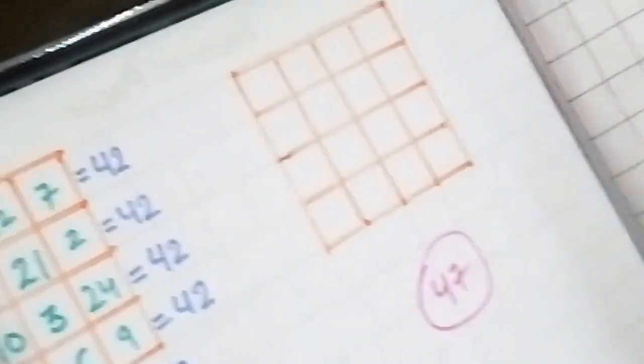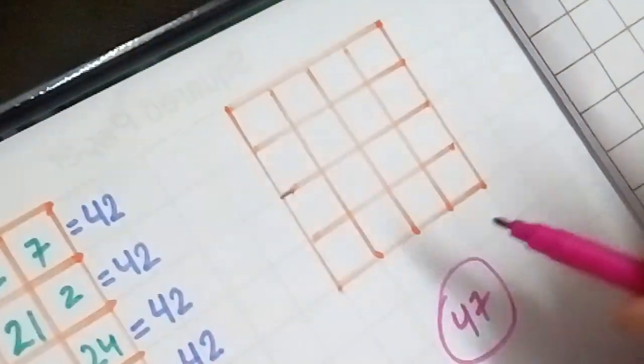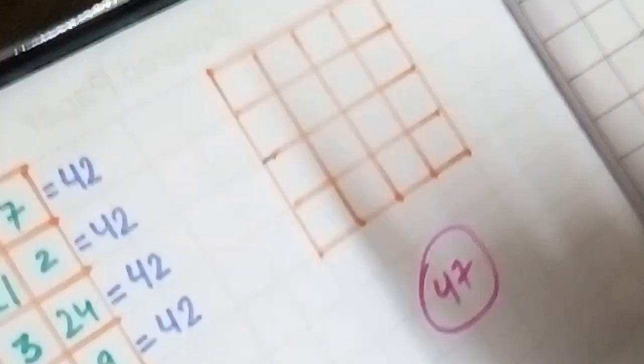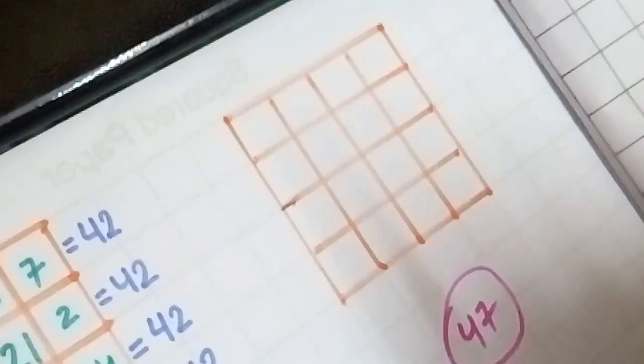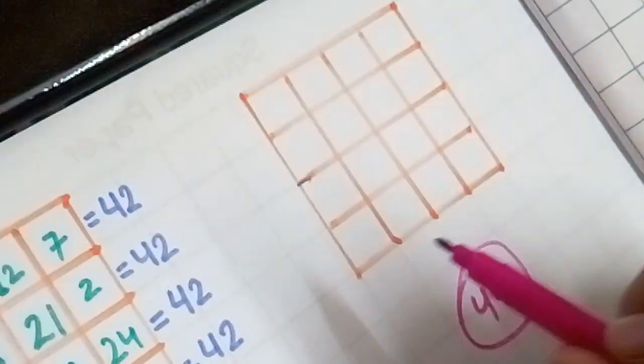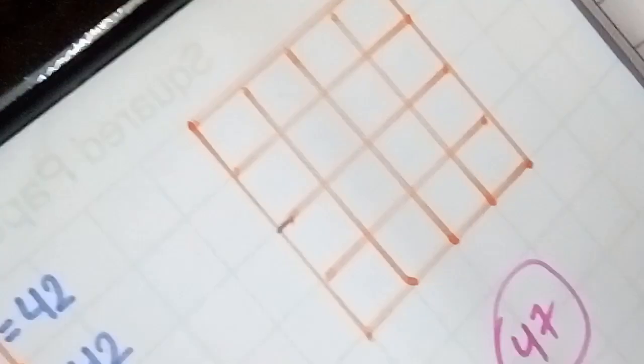So the trick is that we have to consider, we can see that there are 16 blocks in this magic square. And the trick is that 12 blocks would be fixed here. That means out of these 16, 12 blocks would be fixed, the digits wouldn't be changed.